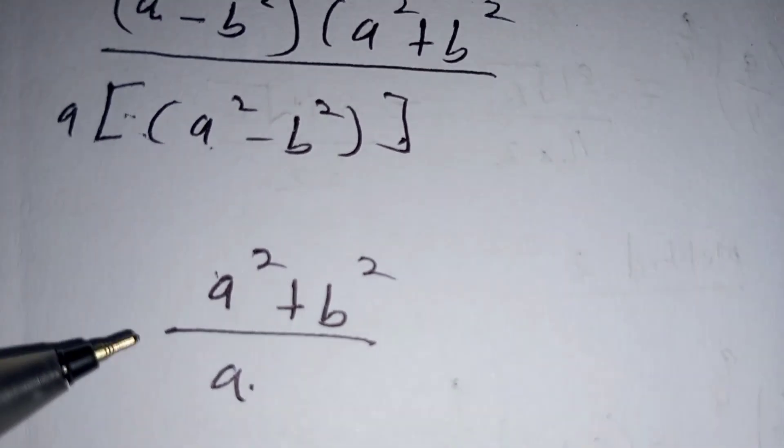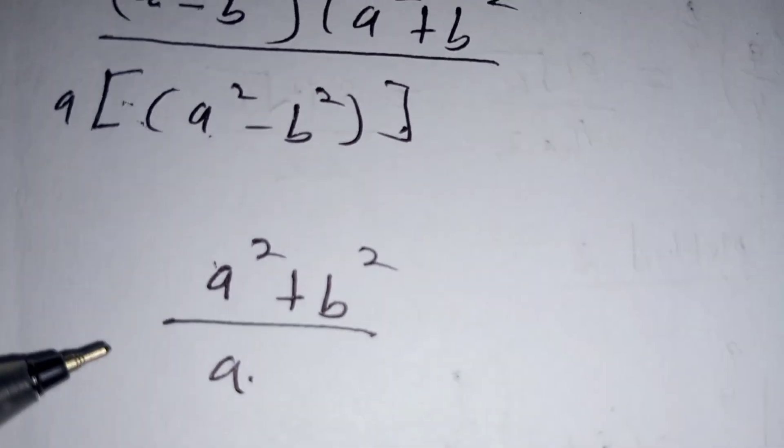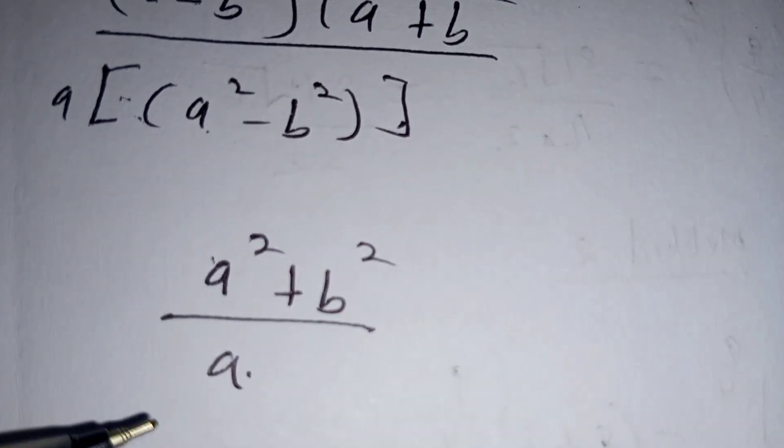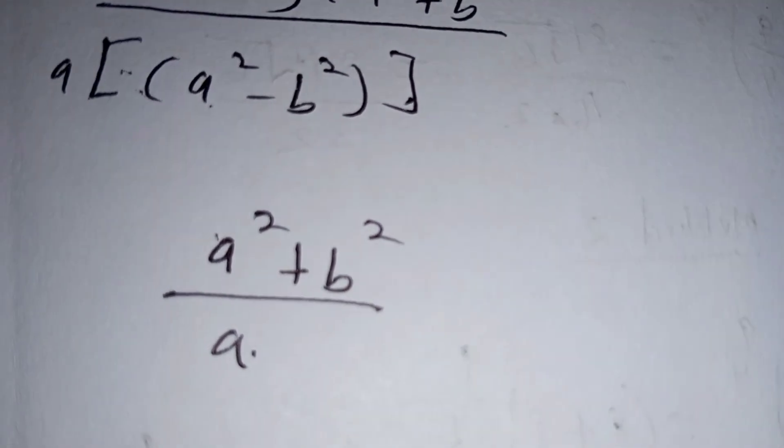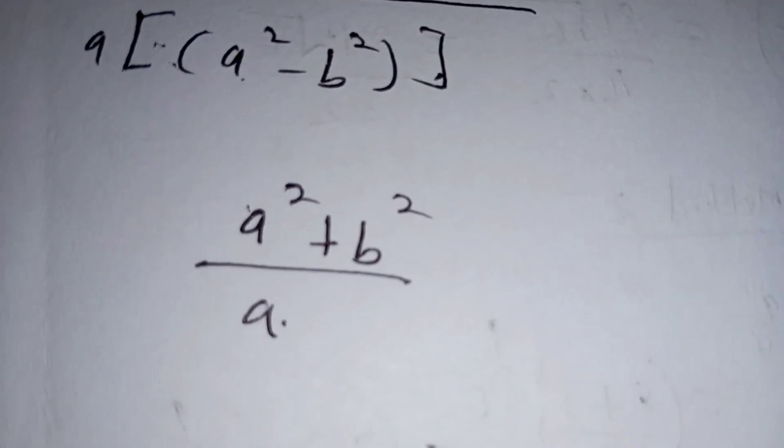After canceling, we are left with a squared plus b squared divided by a. This is the simplification of the given expression.